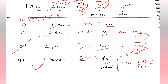Converting 1 torr into pascal or newton per meter square. We know the value of pascal is 101325. Simply divide by 760 to get the value of one torr.